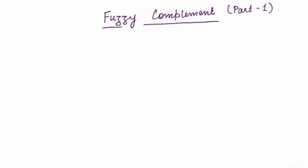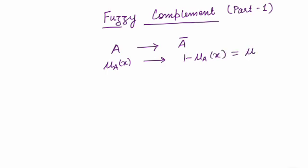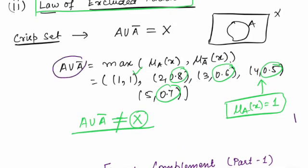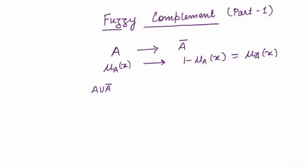Students, if you remember in the last lecture we used this fuzzy complement — we took a fuzzy set A and said that A complement is defined such that the membership grade is 1 minus μ_A(x), which is μ_{A complement}(x). This is how we defined the fuzzy complement, and we also used A union A complement in the last lecture.